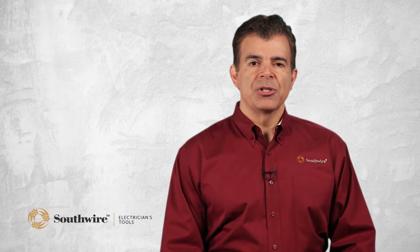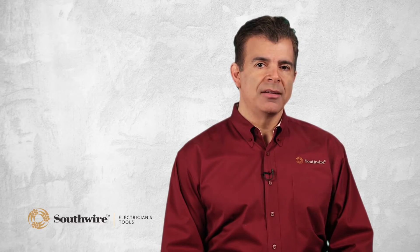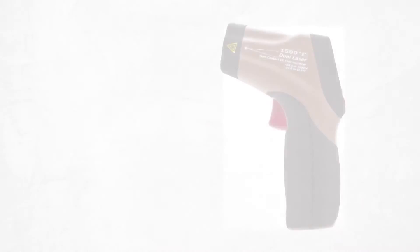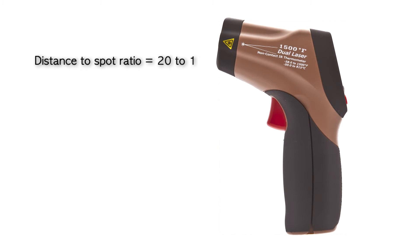Distance to spot ratio is a measure of resolution. It determines how far away a measurement can be made. For example, the top of the line Southwire 31040S has a distance to spot ratio of 20 to 1. So from 20 inches, it measures 1 inch, from 40 inches, 2 inches and so on.